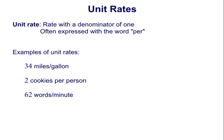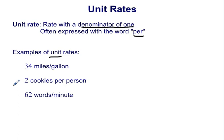A unit rate is a rate with a denominator of one, often expressed with the word 'per.' Examples of unit rates include 35 miles per gallon — that's 35 miles for every one gallon — two cookies per person, which is two cookies for every one person, and 62 words per minute.